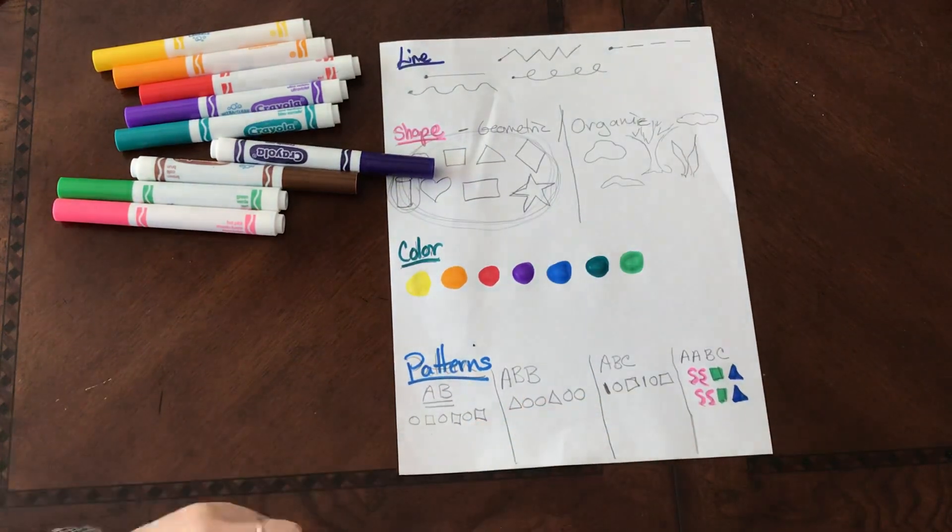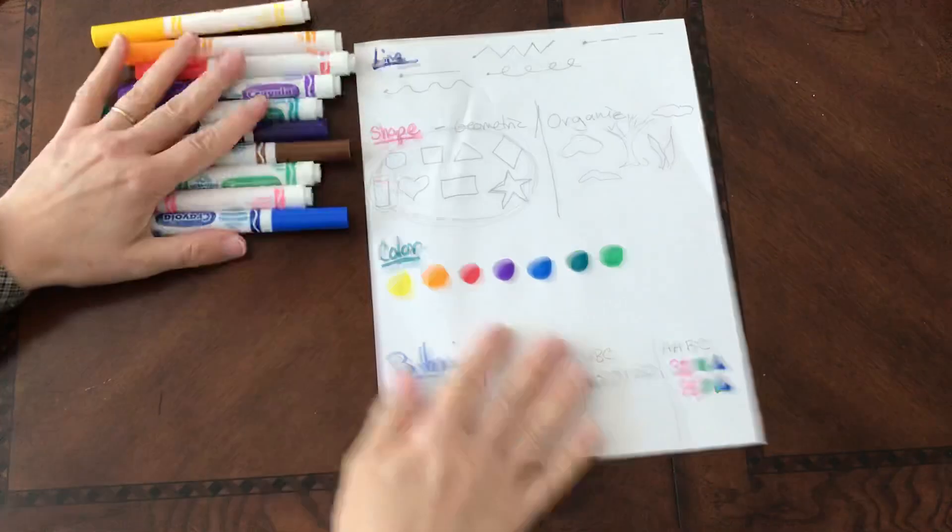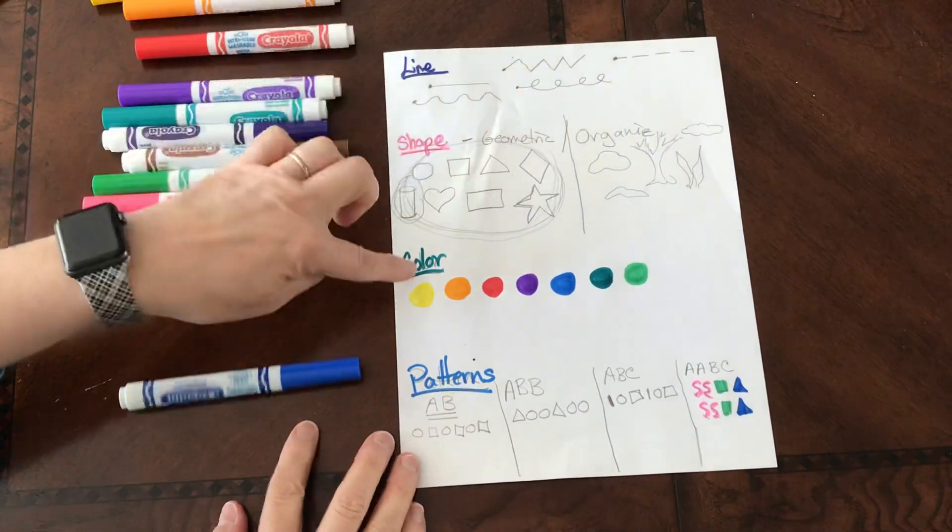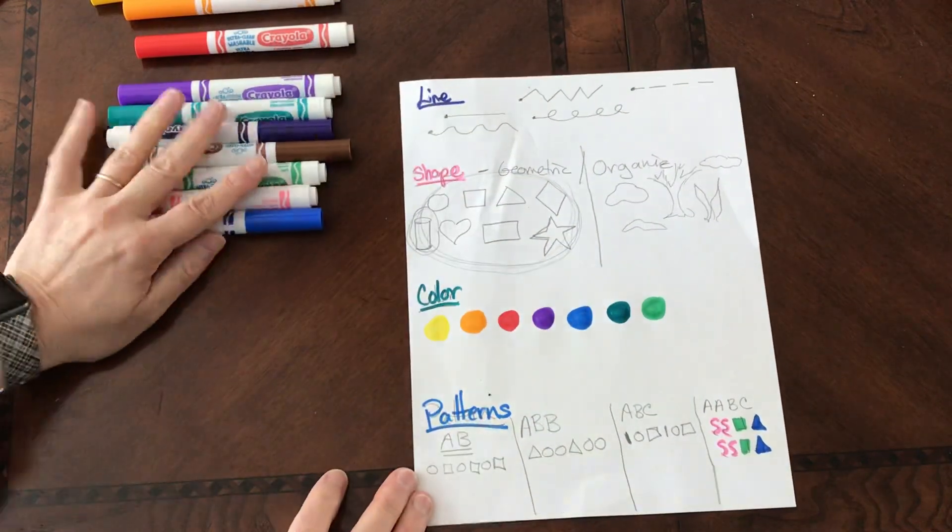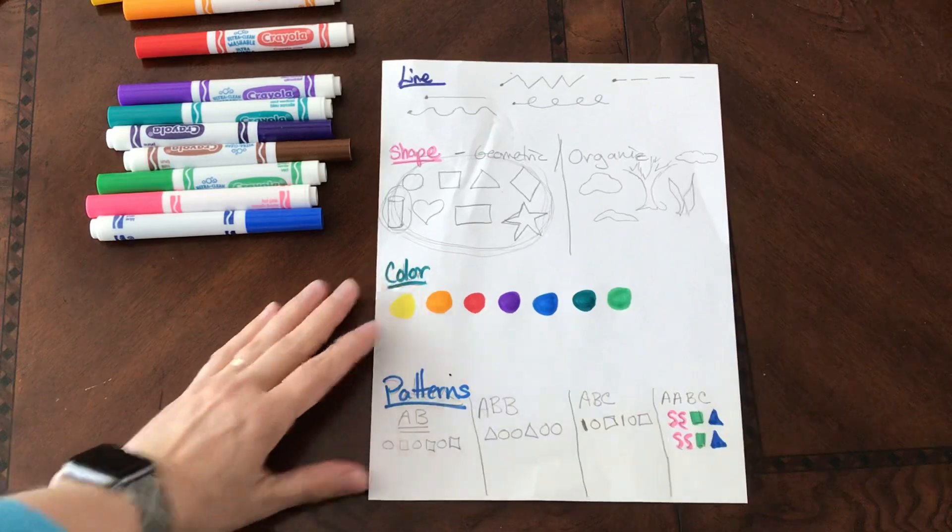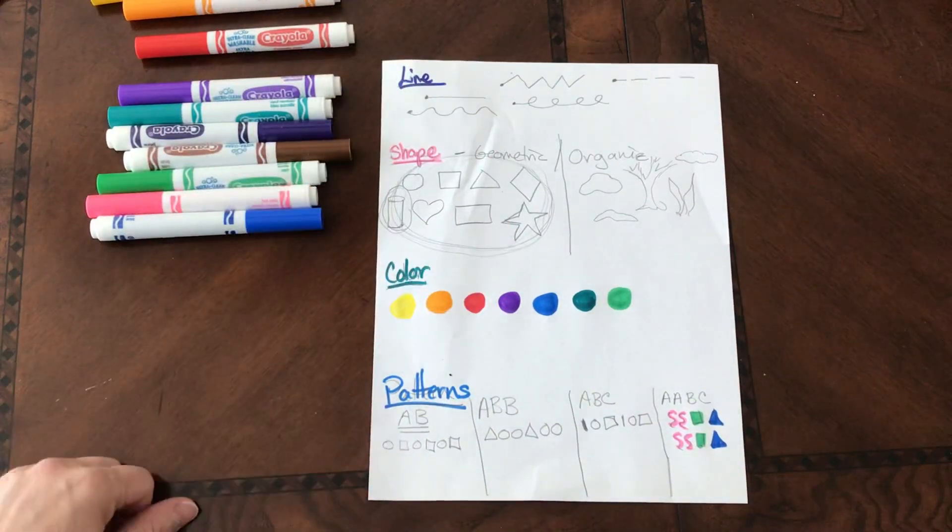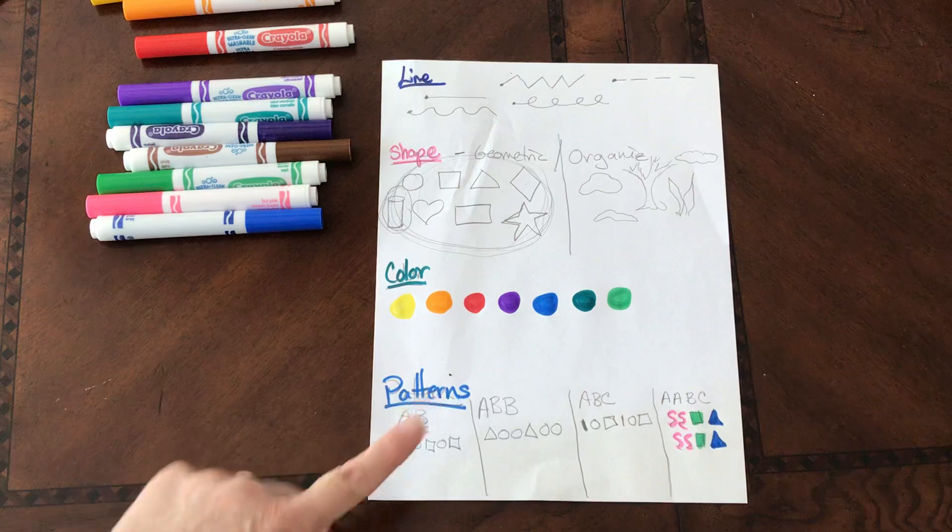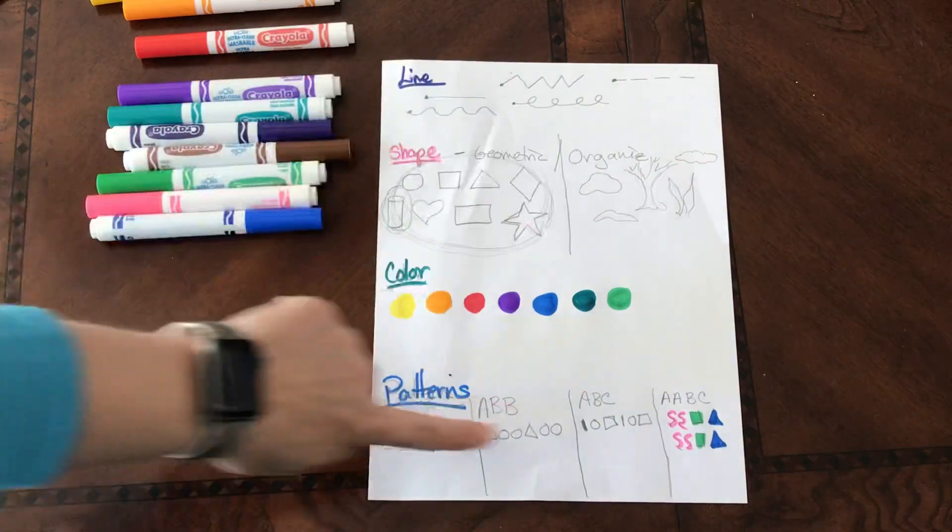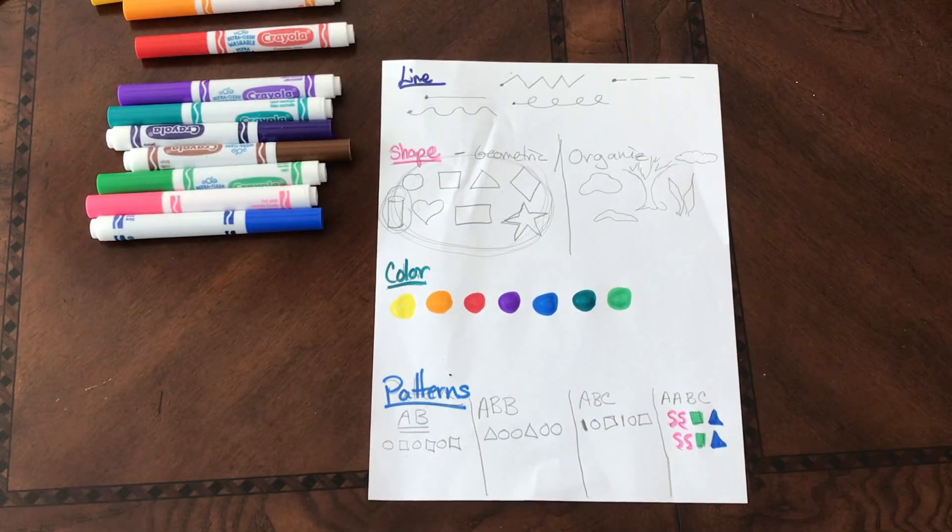So the project that we are going to be doing is going to be using lines, shape, color, and pattern. So be on the lookout for the next video. So you've just learned lots about line, shape, color, and pattern, and all of these things can be used when creating art.